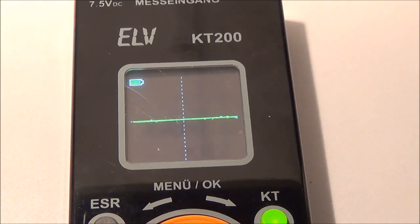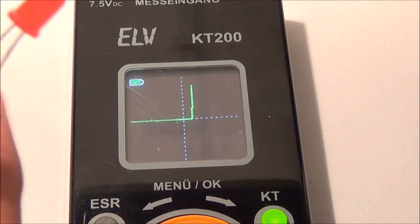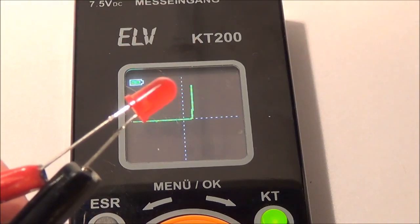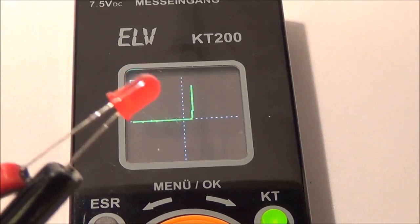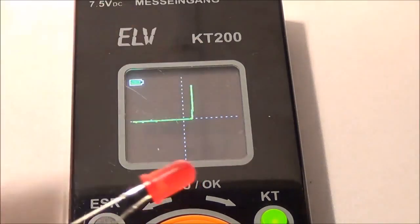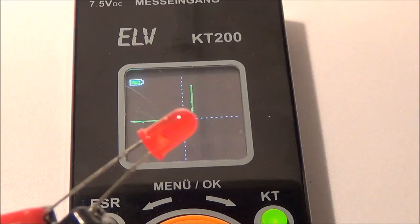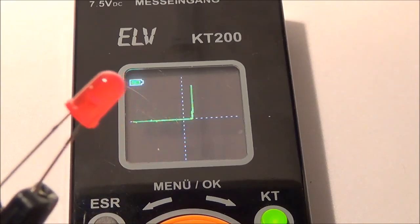And last, we'll take a look at an LED. Here's the LED, and that looks good too. You can see the whole horizontal line is longer because the LED has a higher turn-on voltage.